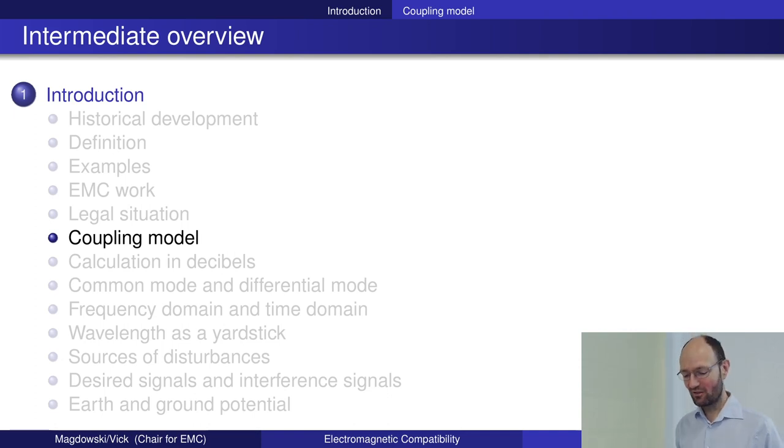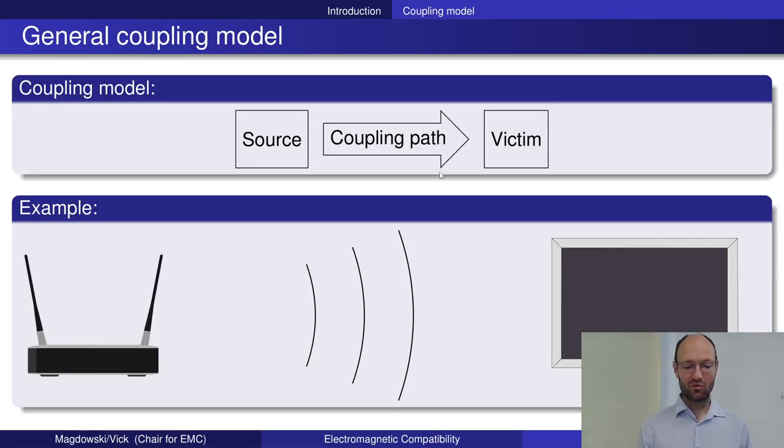Now we can continue with the basic EMC coupling model. This coupling model looks like this: we have a source of disturbance like my cell phone, we have a victim of the disturbance like the speaker, and we have a coupling path in between them.